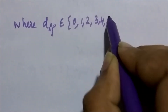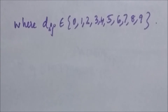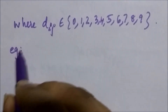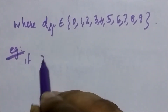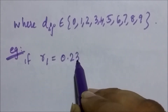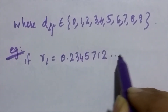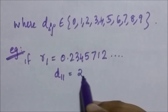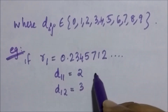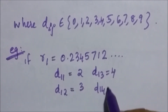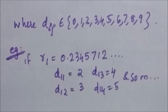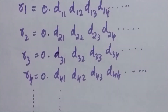Where each Dij belongs to the set {0, 1, 2, 3, 4, 5, 6, 7, 8, 9}. For example, if R1 = 0.2345712, then D11 is 2, D12 is 3, D13 is 4, D14 is 5 and so on. So as we have mentioned, because the set of real numbers between 0 and 1 is countable, we can list all the elements — there is a listing R1, R2, R3 and so on.